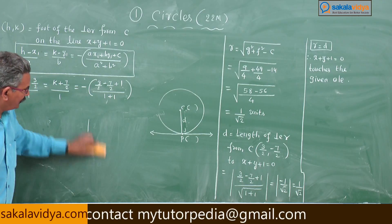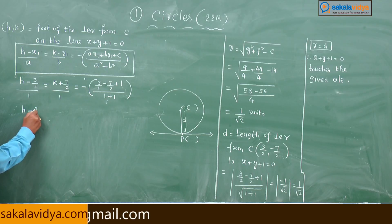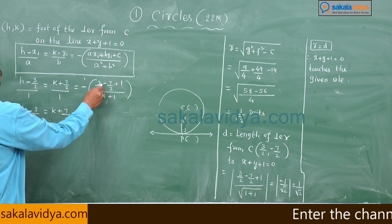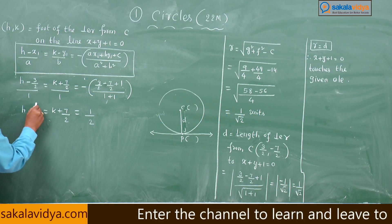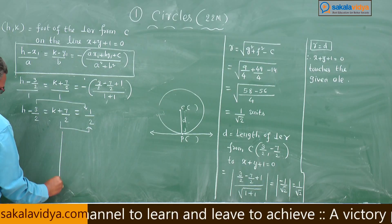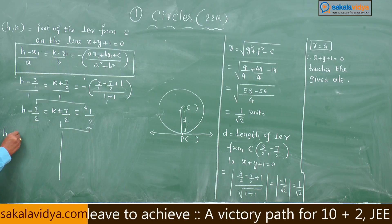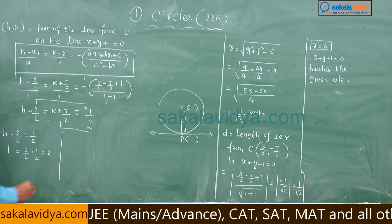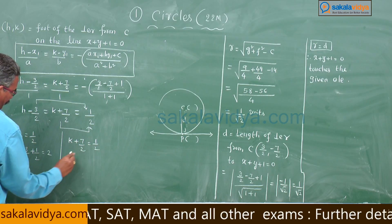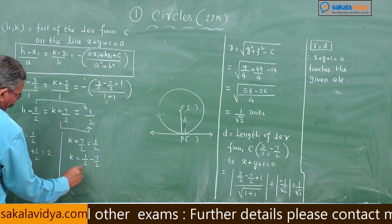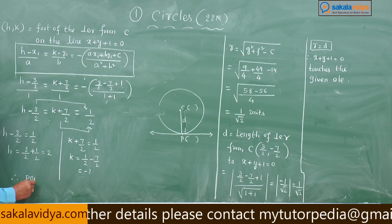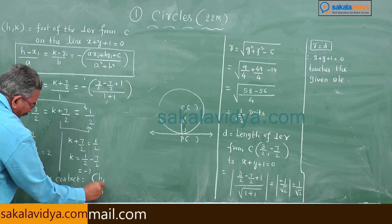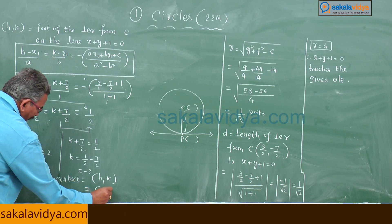Working this out: h minus 3/2 equals k plus 7/2 equals minus(3/2 minus 7/2 plus 1) divided by 2, which gives minus(minus 1) divided by 2, equal to 1/2. Taking the two equations separately: h minus 3/2 equals 1/2, so h equals 2; and k plus 7/2 equals 1/2, so k equals minus 3. Therefore the point of contact is (2, minus 3).